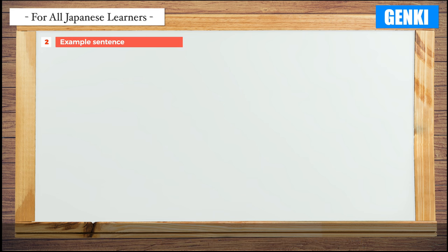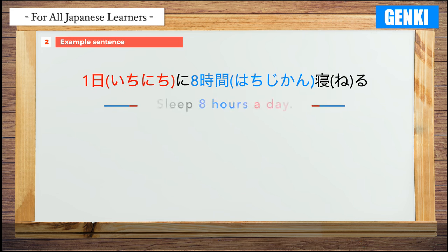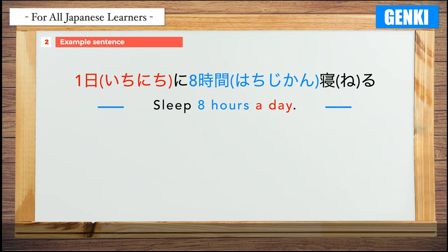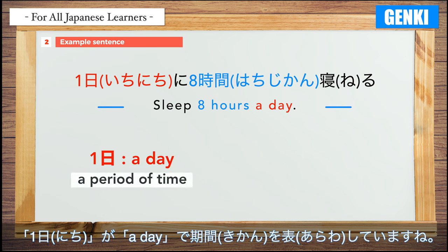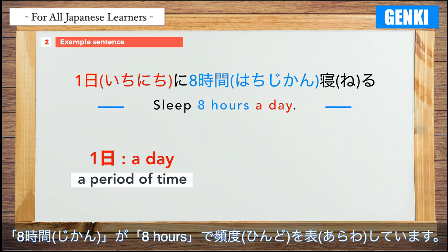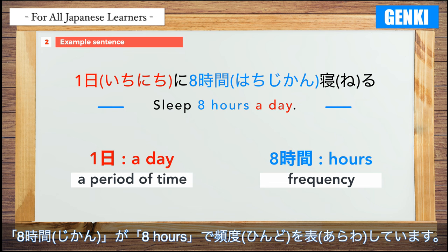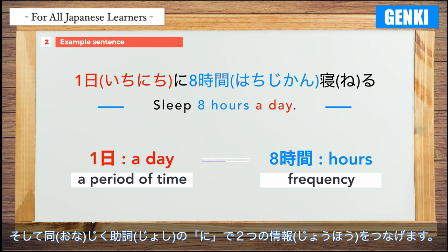Example 2: 1日に8時間寝る — Sleep 8 hours a day. This has the same grammatical structure. The word 1日 (a day) indicates a period of time, and 8時間 (8 hours) indicates frequency. The particle ni connects these two pieces of information.